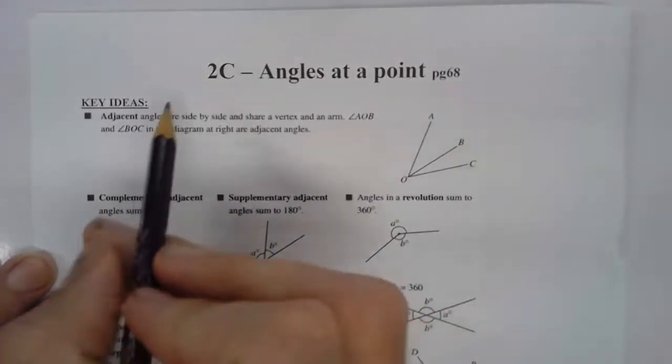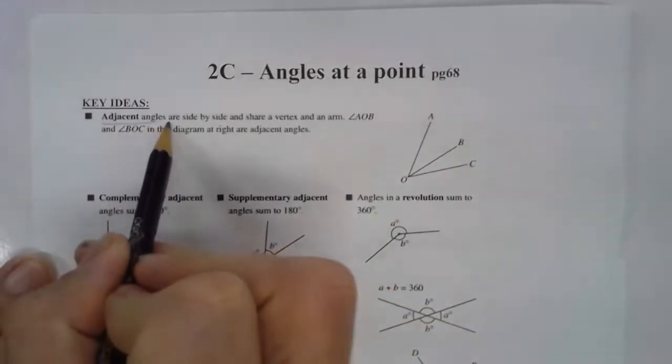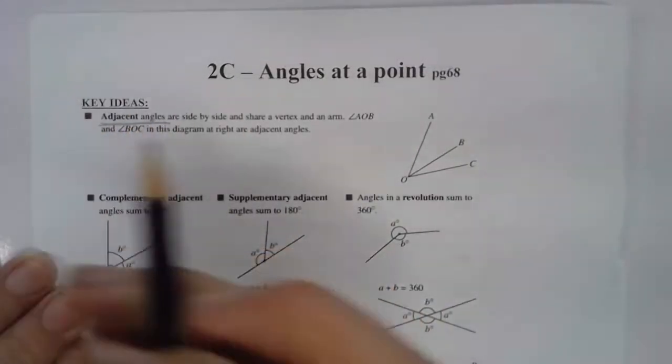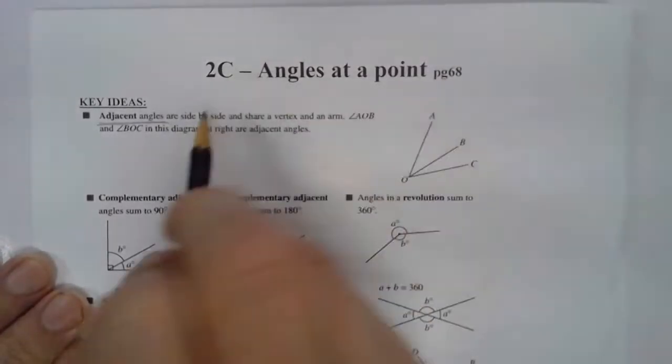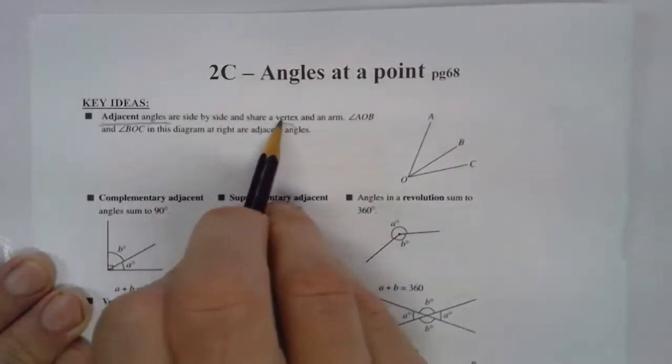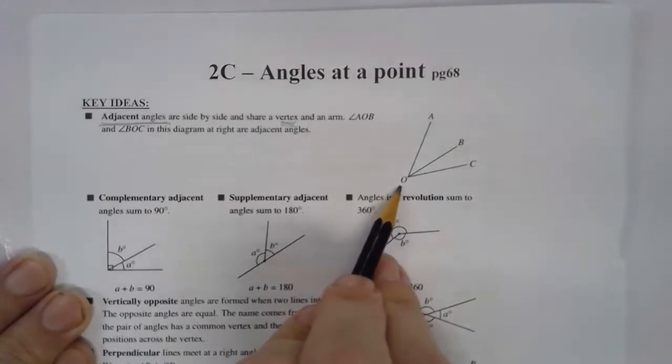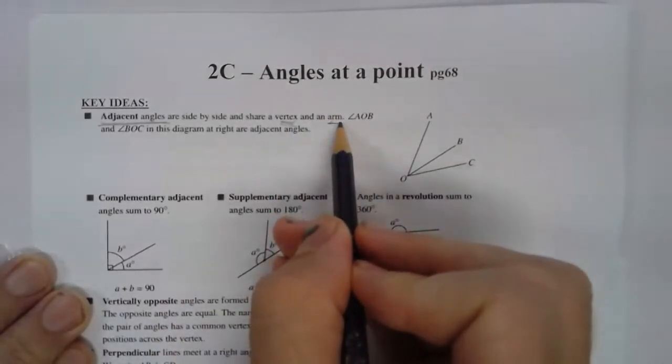The key ideas here are the different types of angles, starting with adjacent angles, which are right next to each other, side by side, and they share a vertex, a common point, and an arm.